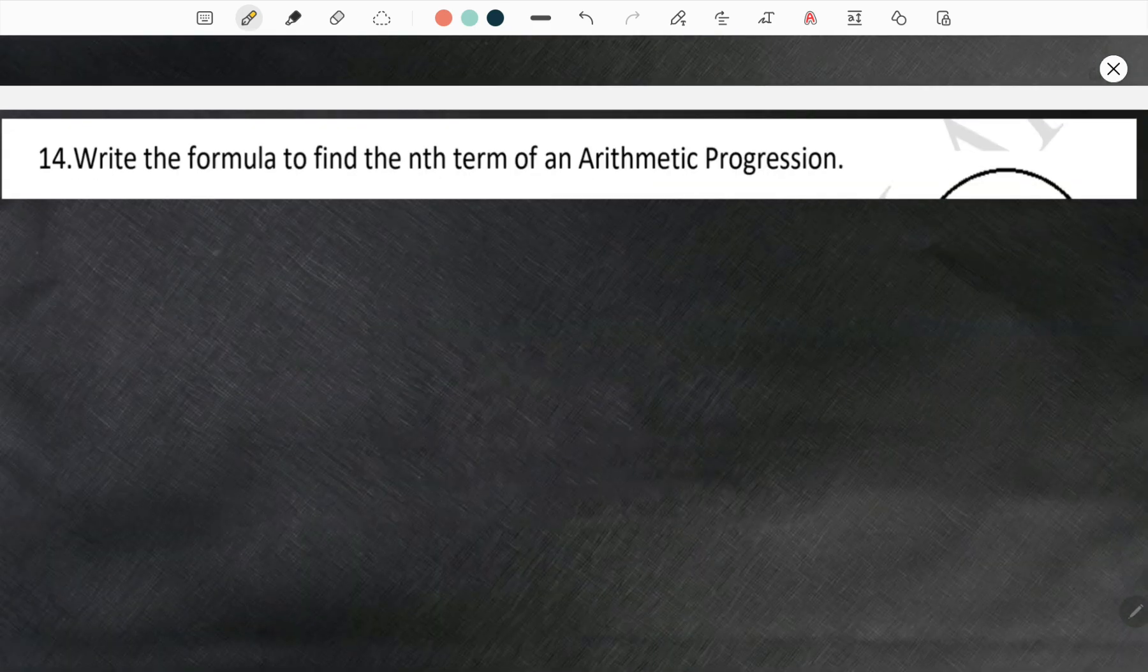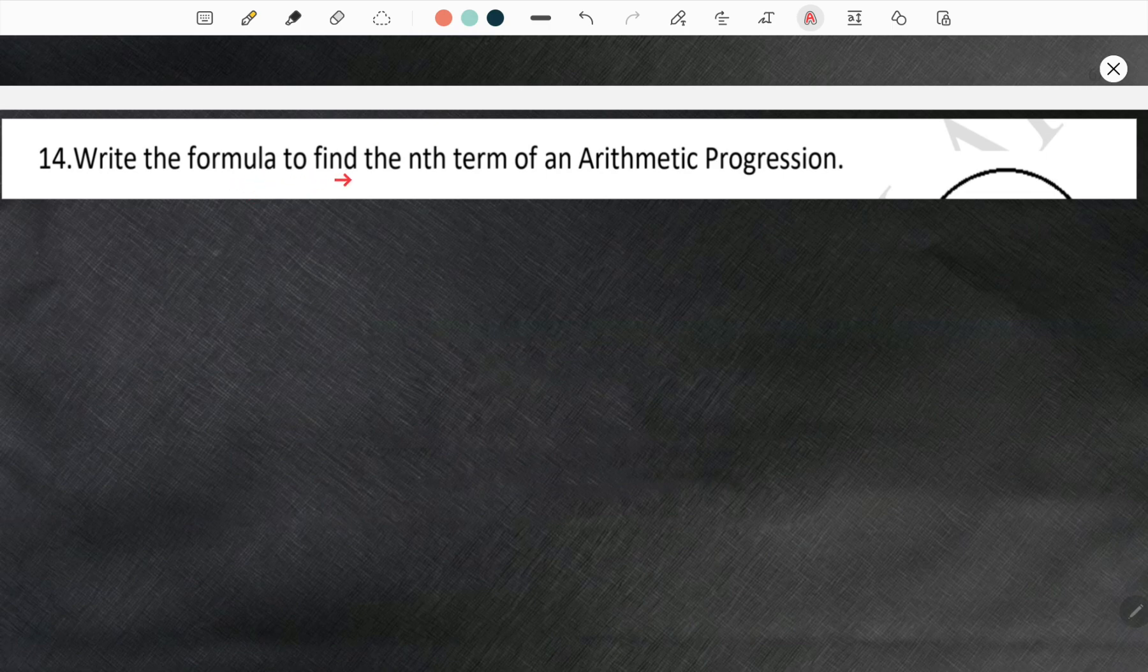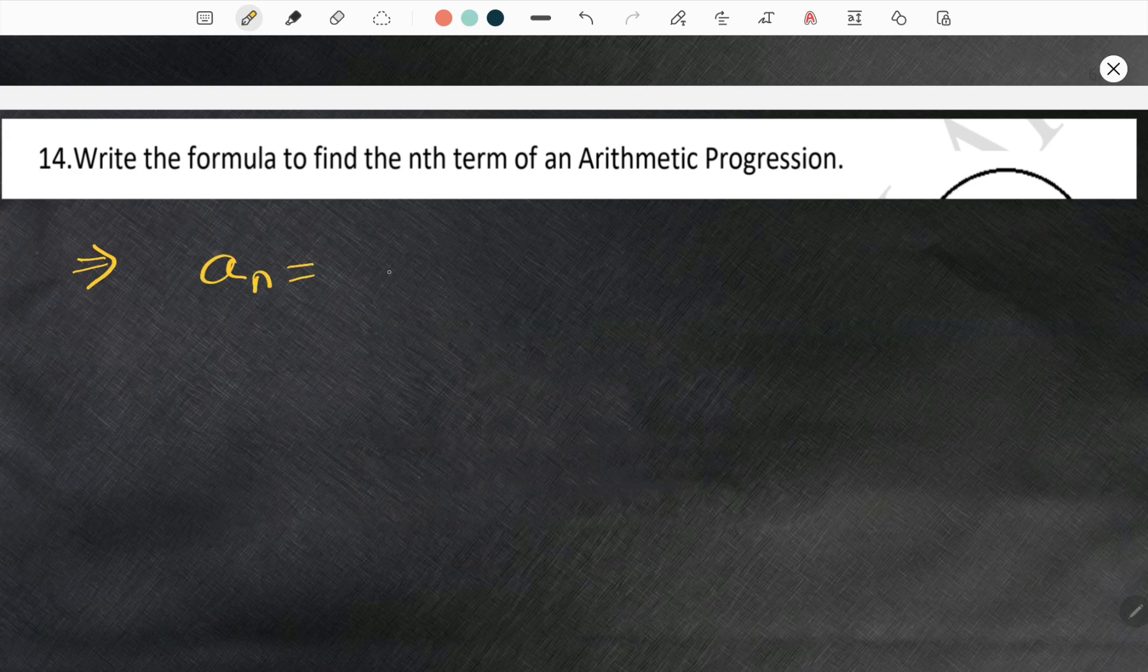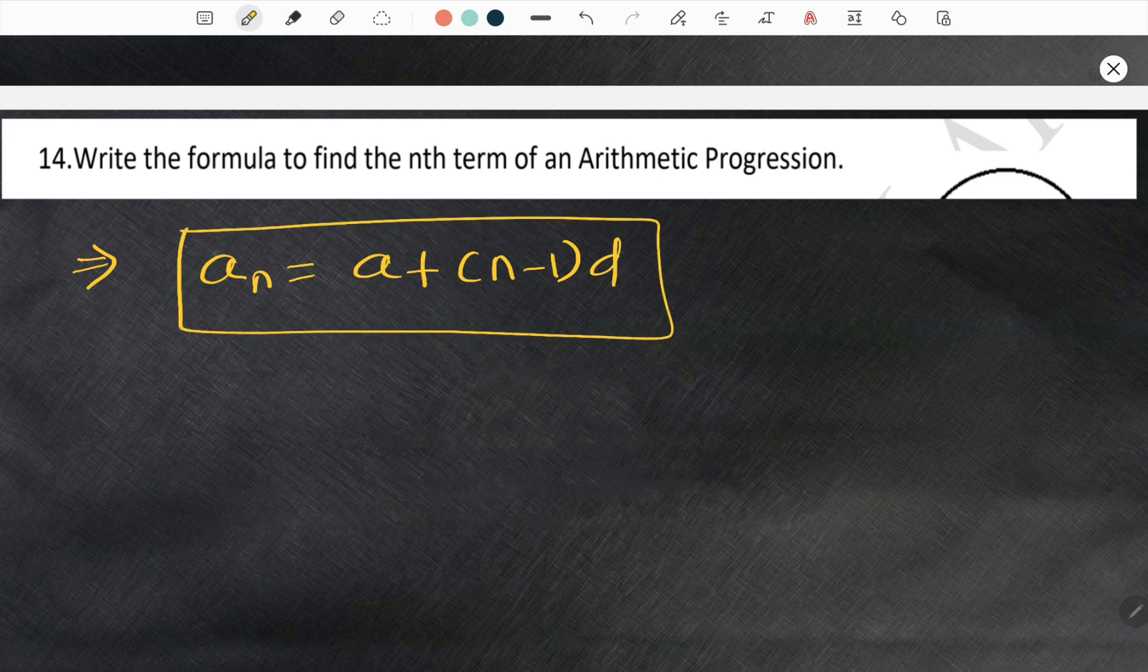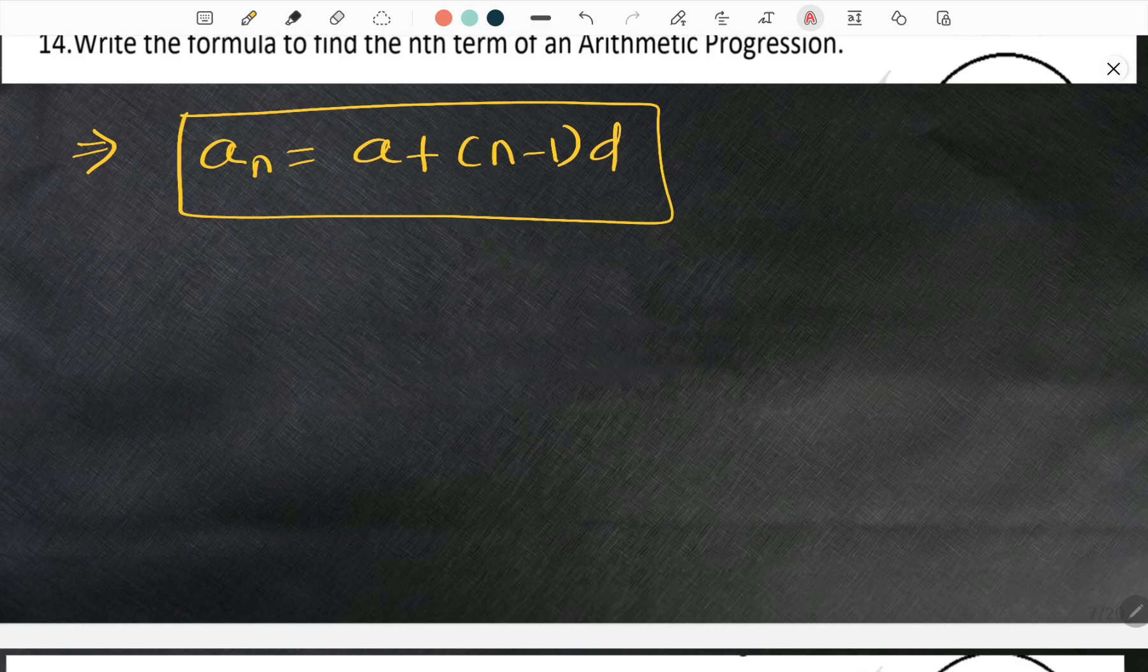Moving forward to the fourteenth question. Write the formula to find nth term of an arithmetic progression. Quite a simple question. So AN is equal to A plus N minus 1 into D. Where A is first term, N is number of terms and D is common difference and AN is nth term.